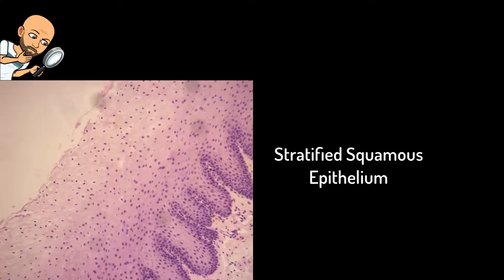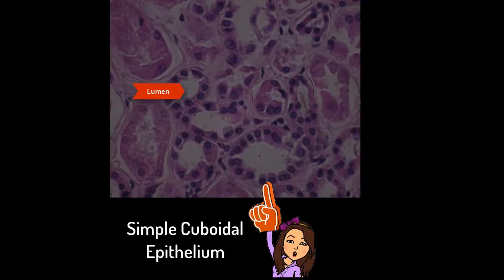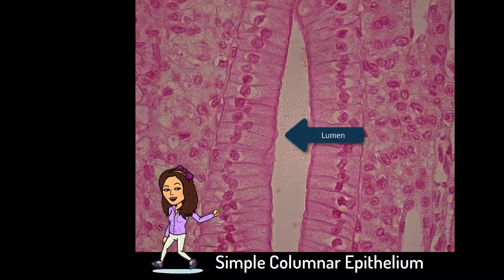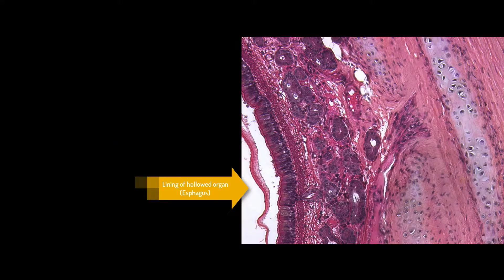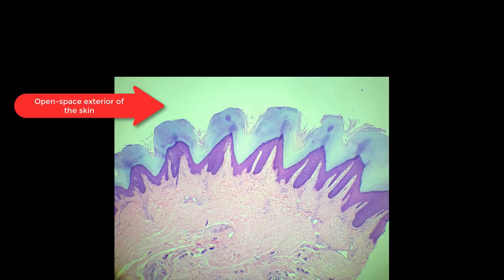Remember that it is the shape of the cells of the apical surface, or those that line the lumen, that give the tissue its name. In fact, the shape of the cells in the rest of the tissue may be really variable. On a slide, the lumen might look like the open space in a blood vessel, the hollow of an organ, or even the open space exterior to the skin.